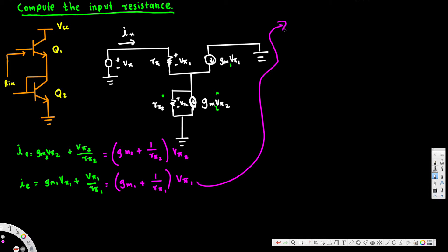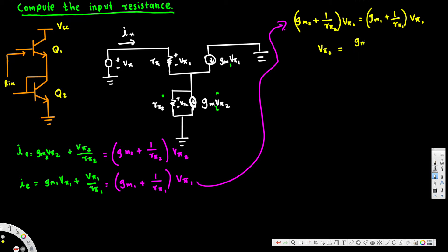Now we can equalize the two: (gm2 + 1/r52)·v52 = (gm1 + 1/r51)·v51. Solving for v52 gives: v52 = [(gm1 + 1/r51) / (gm2 + 1/r52)] · v51.